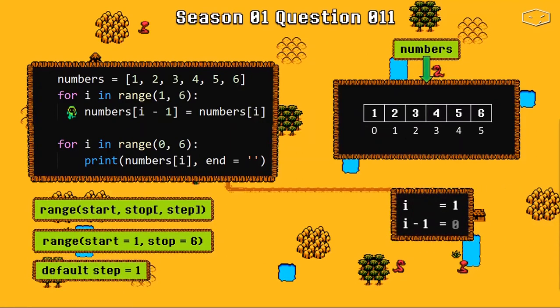So i became 1 and i minus 1 equals 0. Then Python goes to the index 1 of our list, copies the value, goes to the previous index of our list and pastes the value. A new cycle begins.